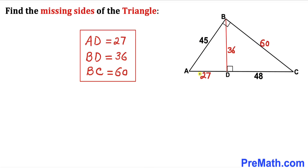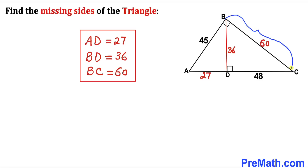So our unknown sides are: AD = 27 units, altitude BD = 36 units, and side length BC = 60 units. That's our final answer. Thanks for watching — please don't forget to subscribe to the channel for more exciting videos.